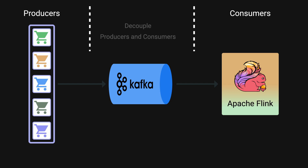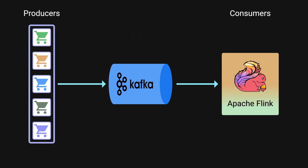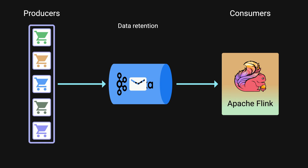First, it decouples the producers and the consumers. This decoupling allows for flexibility and scalability by allowing both data producers and consumers to write and read data respectively at their own pace. Second, it helps protect against buffering and back pressure handling — bursts of data or temporary load spikes can happen, and Kafka can buffer and prevent overwhelming Apache Flink with data. Third, it provides data retention and replayability to recover from failures.